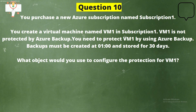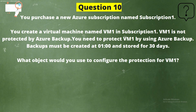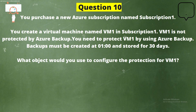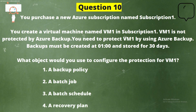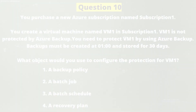Next question: You purchase a new Azure subscription named Subscription1. You create a virtual machine named VM1 in Subscription1. VM1 is not protected by Azure Backup. You need to protect VM1 using Azure Backup. Backups must be created at 1 AM and stored for 30 days. What object would you use to configure the protection for VM1? Options: option 1, a backup policy; option 2, a batch job; option 3, a batch schedule; option 4, a recovery plan.